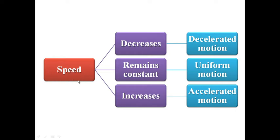The speed of the object may decrease, remain constant, or increase. If the speed of the object decreases, the object is said to be decelerated. If the speed remains constant, the motion is said to be uniform. If the speed of the object increases, the motion is said to be accelerated.